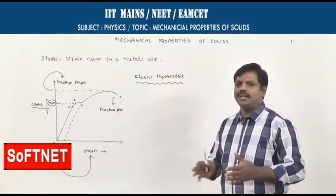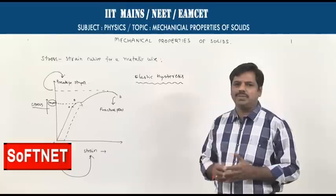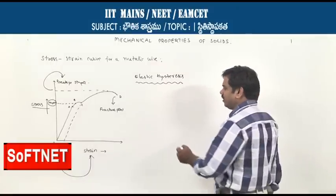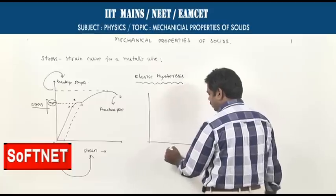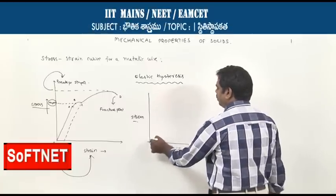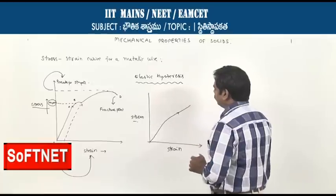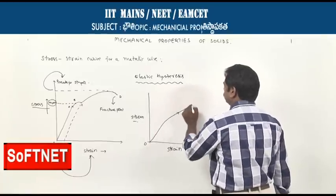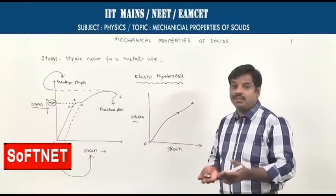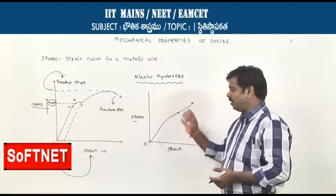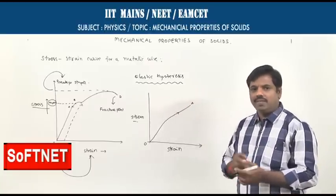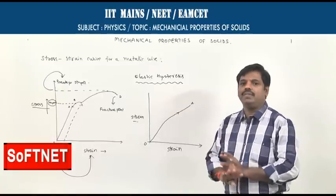Some materials such as rubber can be stretched up to six or seven times their original length. Such materials are called elastomers. In the case of elastomers, the stress-strain graph follows a different path. It does not follow Hooke's law, but even after releasing the maximum load applied, the rubber returns to its original size and shape — showing elastic property even under large forces.